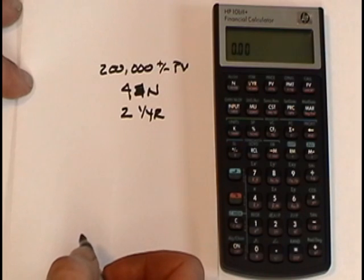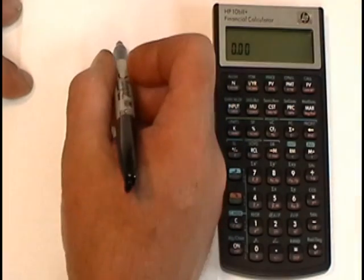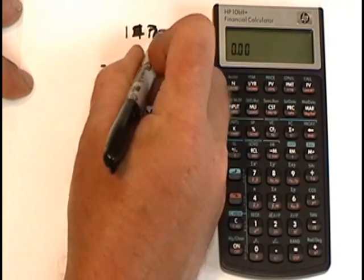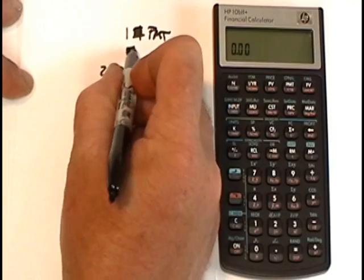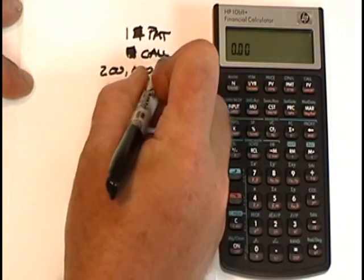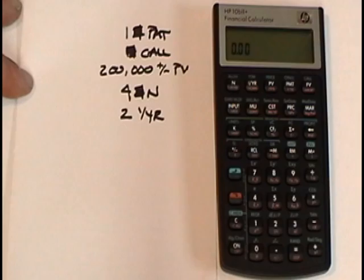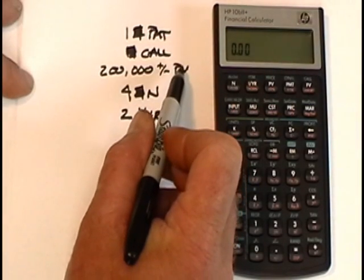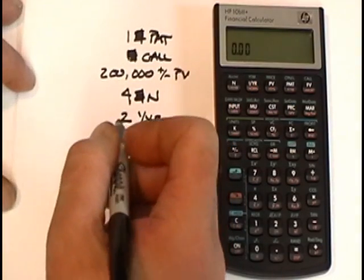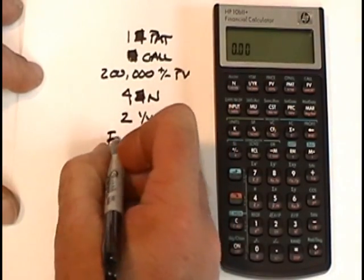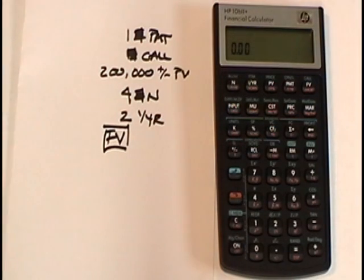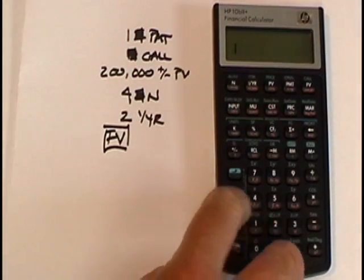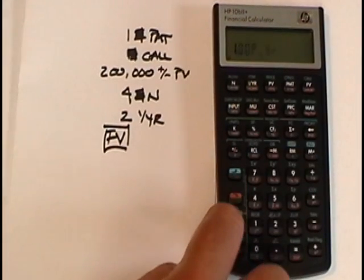So this is a problem about price appreciation. Price appreciation problems are always done in one payment per year mode. So the preset will be one gold key payment and then gold key clear all to make sure that the one payment took. Time value of money tells us if I have three, in this case PV, term and rate, I solve for the fourth, which is going to be future value. So here's my key presses for this problem. One gold key payment, gold key clear all. So I'm good to go. I'm on one payment per year.